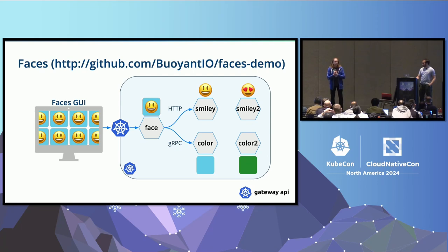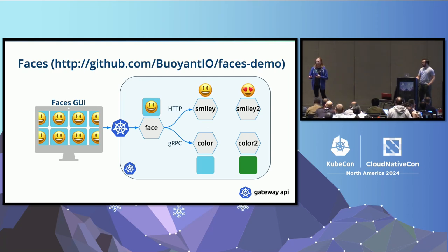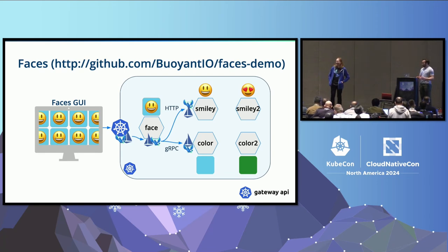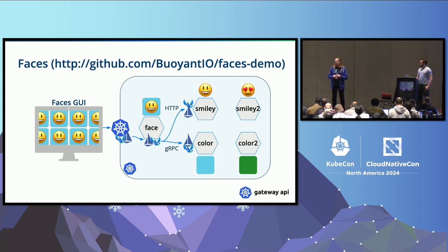We're using a Gateway API ingress controller to mediate access between the GUI and the cluster. For Flynn's machine this will be Envoy Gateway; for Mike's machine it will be the Istio ingress gateway. Part of the point is that it doesn't really matter. We have a mesh running — Flynn will be running Linkerd, Mike will be using Istio. With one exception, it's exactly the same. It does not matter which of the two you're choosing if the things you're doing are the things we're doing here in this workshop.